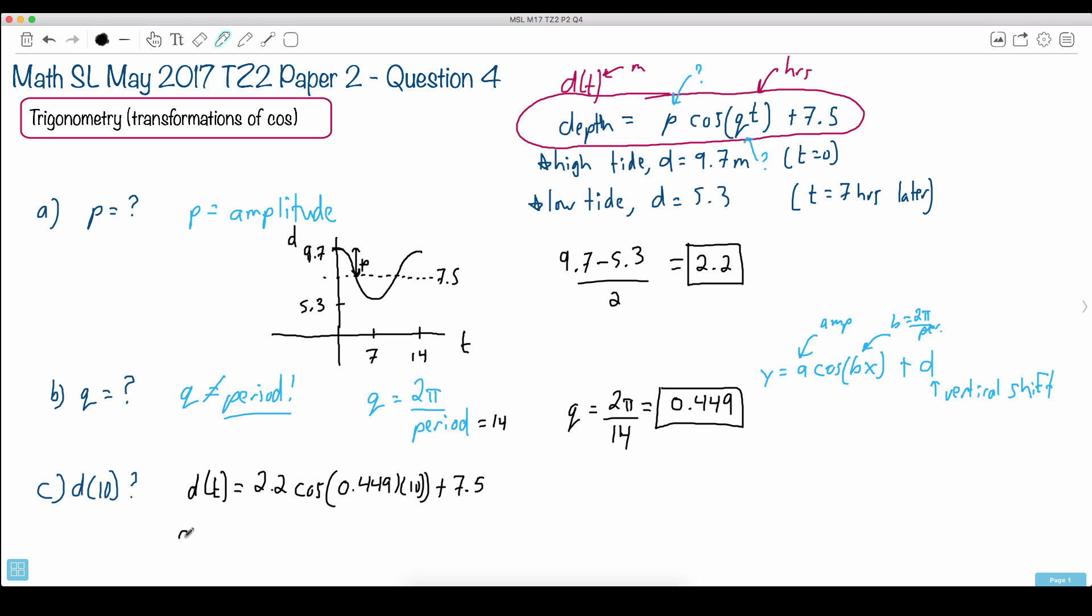Now, I don't need a calculator for that last part there, or at least this next part, because if I want to figure this part here out, 0.449 times 10, multiplying by 10 just moves the decimal, so that just makes it 4.49, and I do plus 7.5. All I have to do then is just figure this out on my calculator.